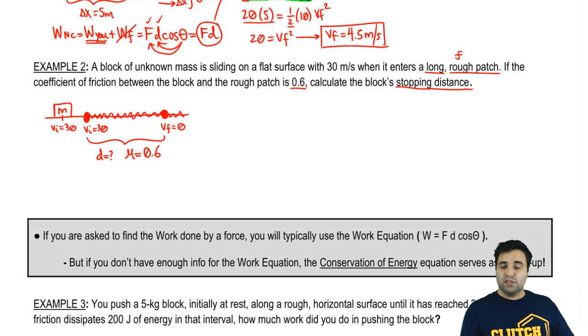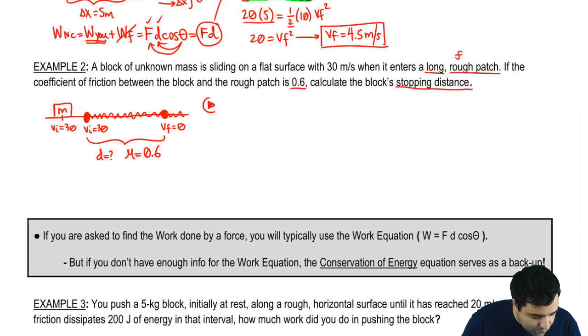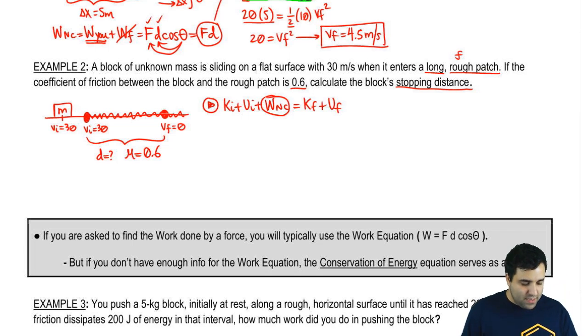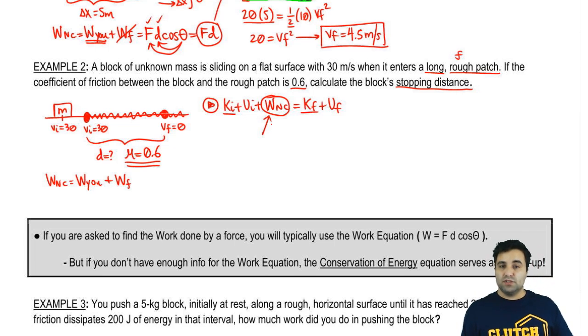We can solve this with the energy equation. When I write the energy equation, work non-conservative is made up of two parts: work non-conservative is made up of the work done by you plus the work done by friction. Since this is a problem of change in velocities due to friction, velocities are kinetic energies, and friction is part of this work non-conservative term, then we can solve this. All the elements of this problem are in the energy equation.